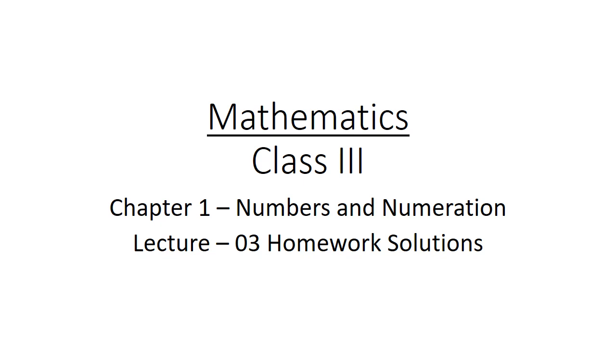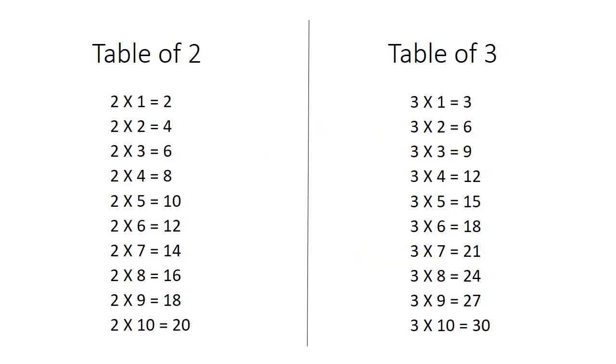So let's revise table of 2. 2 ones are 2, 2 twos are 4, 2 threes are 6, 2 fours are 8, 2 fives are 10, 2 sixes are 12, 2 sevens are 14, 2 eights are 16, 2 nines are 18, 2 tens are 20.